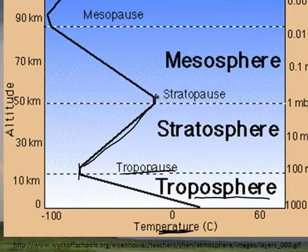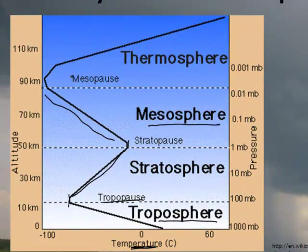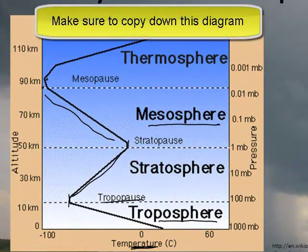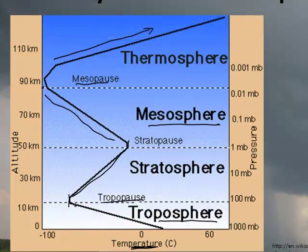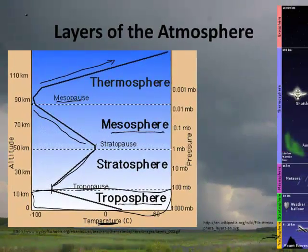Above the tropopause, the temperature actually begins to rise — that's the stratosphere. Then it flattens out again at the stratopause. Higher yet, the temperature drops to a very cold level in the mesosphere, then rises again at the mesopause and into the thermosphere. All of our weather happens in the troposphere. The thermosphere is approaching space.